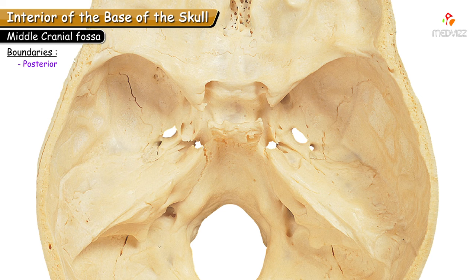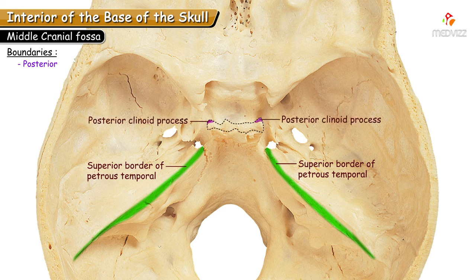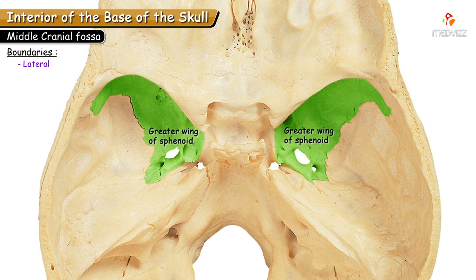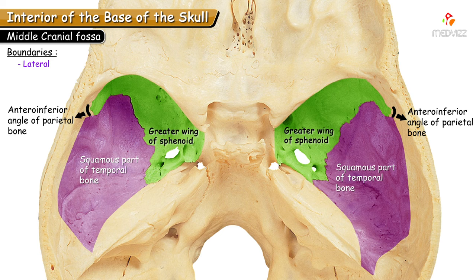Posteriorly, the middle cranial fossa is bounded by the superior border of the petrous part of the temporal bone and the dorsum sellae, which is the posterior projection of the body of the sphenoid. On each side of the dorsum sellae, the angular projections are the posterior clinoid processes. These structures form the posterior boundary. Laterally, the middle cranial fossa is limited by the greater wing of sphenoid, the anterior inferior angle of the parietal bone, and the squamous part of the temporal bone.